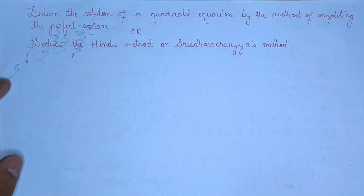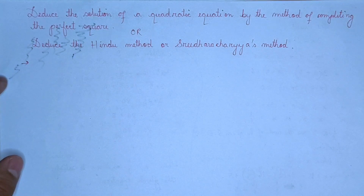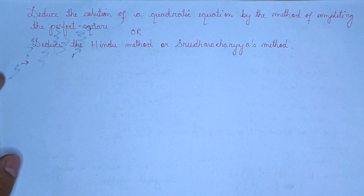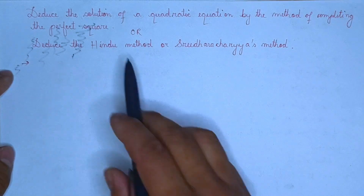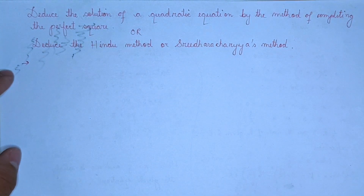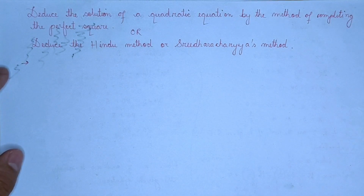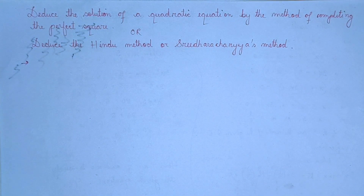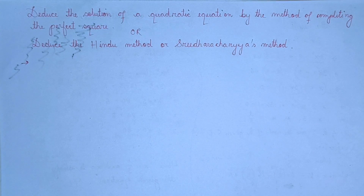Deduce the solutions of a quadratic equation by the method of completing the perfect square. Deduce the Hindu method, or Sridharacharya method.